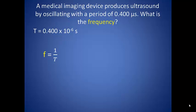Suppose a medical imaging device produces ultrasound by oscillating with a period of 0.4 microseconds. What is the frequency? Well, the hard part here about this problem is that the time is given in microseconds. One microsecond is 10 to the negative sixth seconds, so all we have to do is add on our original given time. And since frequency is the inverse of the period, we can just divide 1 by 0.4 times 10 to the negative sixth to get 2.50 times 10 to the sixth hertz.